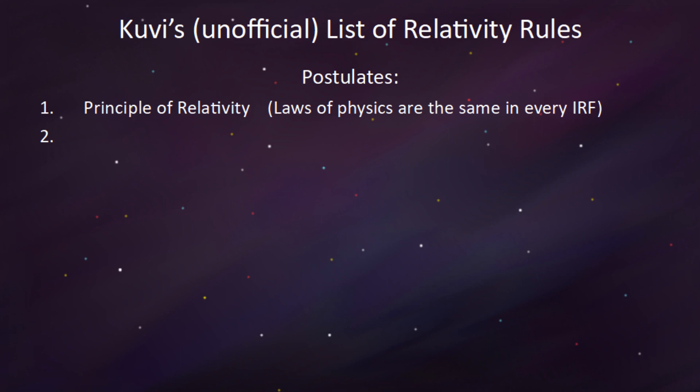The second postulate states that the speed of light is the same in any inertial reference frame. This rule is called invariance of c. With those two rules written down, let's get into time dilation.